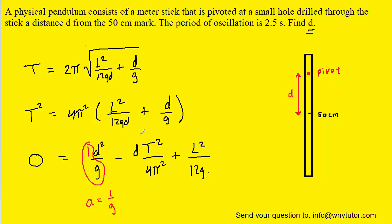Our b value is going to be negative T²/4π², and then our c value will be this positive L²/12g. A little bit messy but we'll do our best to plug into the quadratic formula.